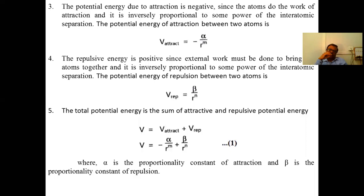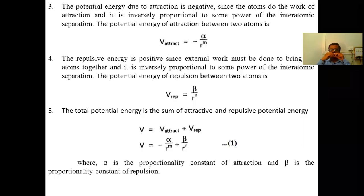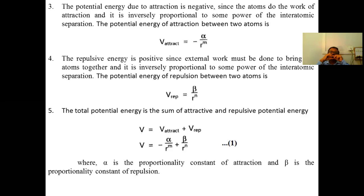Therefore, the potential energy of attraction between two atoms is: V_attraction = −α / R^m, where α is called the proportionality constant of attraction. If there is attractive force between atoms, the potential energy is negative because no external work is done. If there is a repulsive force, we have to apply external energy to bring them together, so the potential energy is positive.